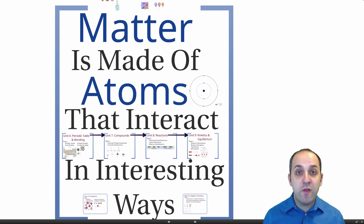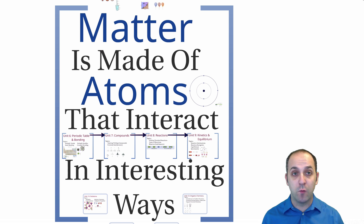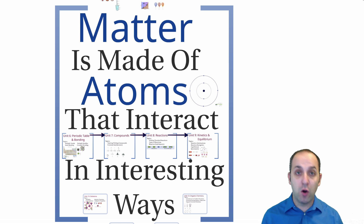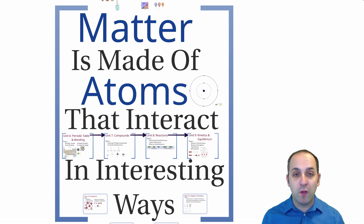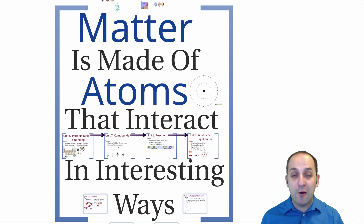Remember that our theme for the year is that matter is made of atoms that interact in interesting ways. We started by talking about large amounts of matter, then we went in and looked at the structure of individual atoms, and in our most recent section of the course we looked at what happens when we start putting atoms together in compounds, reacting those compounds together, and the energy that's involved.